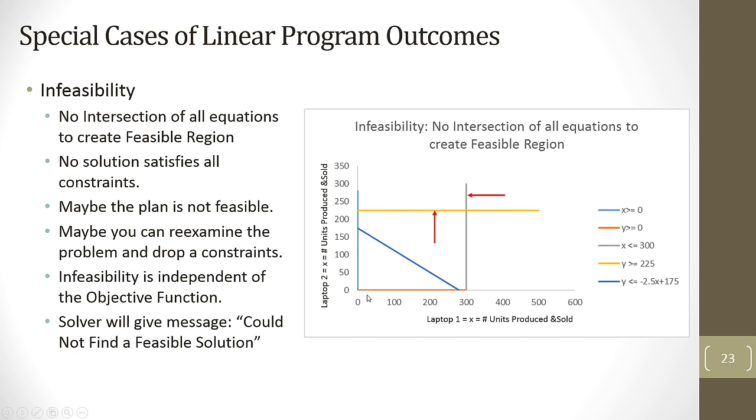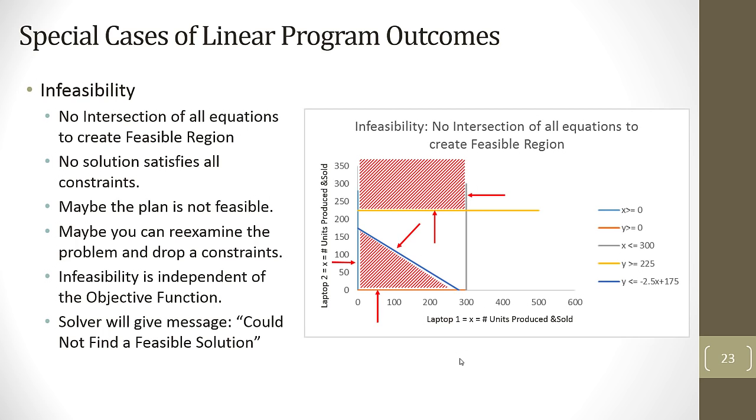But notice we have one, two, three other lines. Arrow, arrow, arrow. They're pointing in. And that means one, two separate regions with no overlap. The message you'll get in Solver will say, could not find a feasible solution.